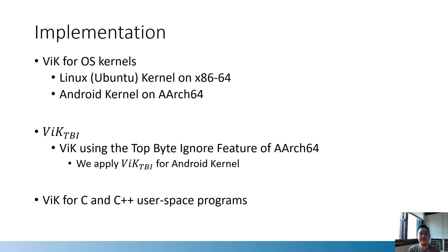We implemented VIG for two different operating system kernels on x86 and ARM64 architectures. We also implemented VIG TBI with the top-byte-ignore feature of ARM64, since TBI affects only the most significant 8 bits. In this implementation, we do not use the base identifier, so VIG TBI inspects pointer operations using pointer values that point to the base address of a memory object. Lastly, we also implemented VIG for C and C++ user-space programs.